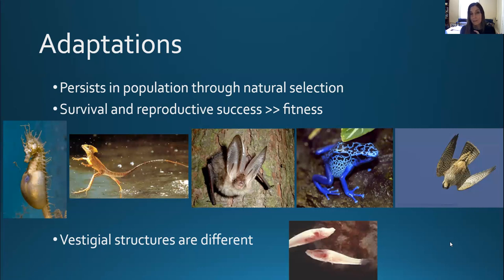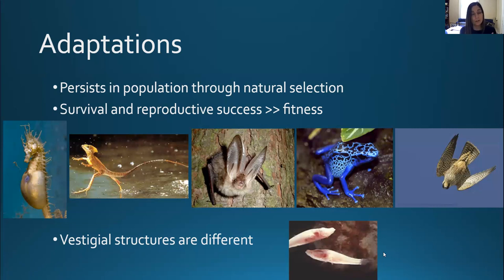These adaptations are things we'll be thinking about when we look at different taxa throughout the semester — how is this increasing survival and reproduction, why did this adaptation persist, and which adaptations are specific to different taxa so that seeing one tells you whether it's a fish or a reptile? Vestigial structures are different from adaptations. Vestigial structures are characteristics that become reduced or even absent over time not because they help survival, but because they're not used. Cave fish that live in complete darkness have had their eyes reduced because they aren't needed to survive and reproduce — that's a vestigial structure.